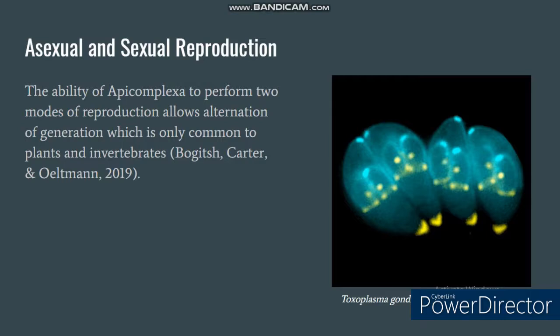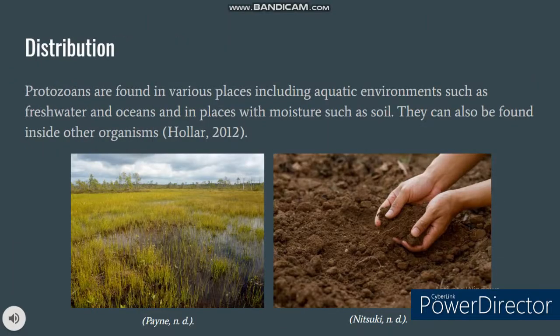Both modes of reproduction — sexual and asexual — are exhibited by apicomplexa. This ability allows the alternation of generations, which is only common to plants and invertebrates. Protozoans are found in various places, especially in aquatic environments including freshwater and oceans. They can also be found in places with rich moisture, such as soil. Moreover, you can also find protozoans inside the bodies of other organisms.